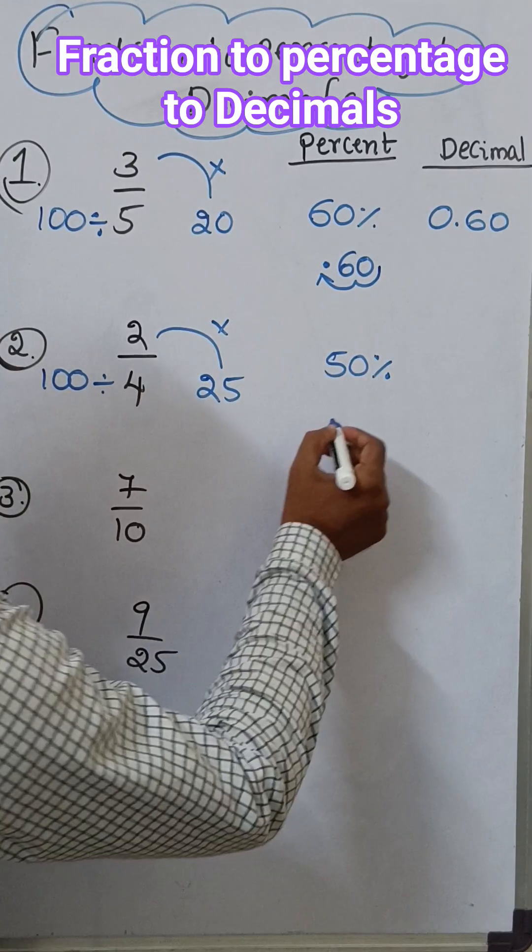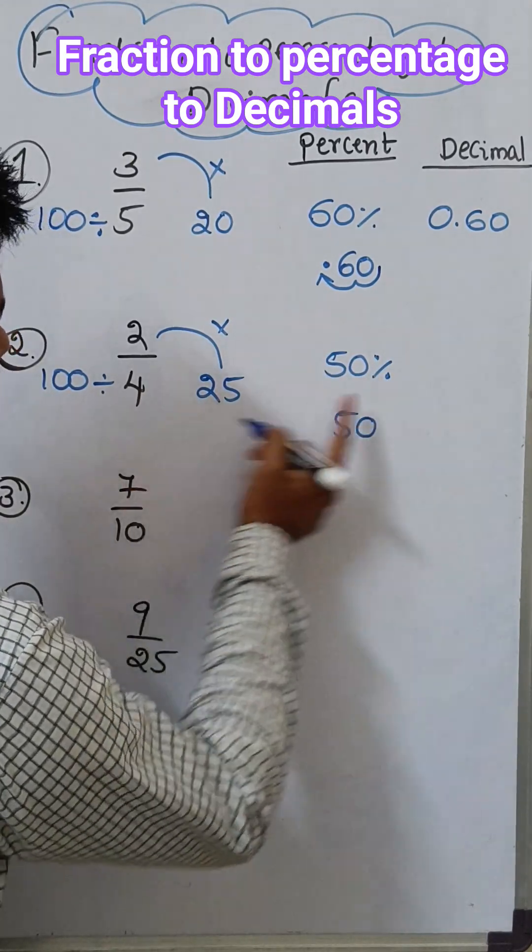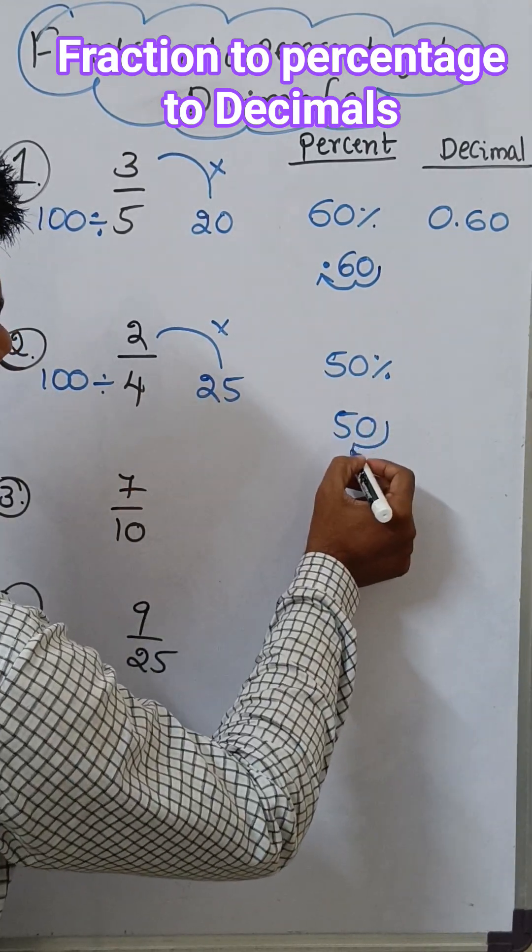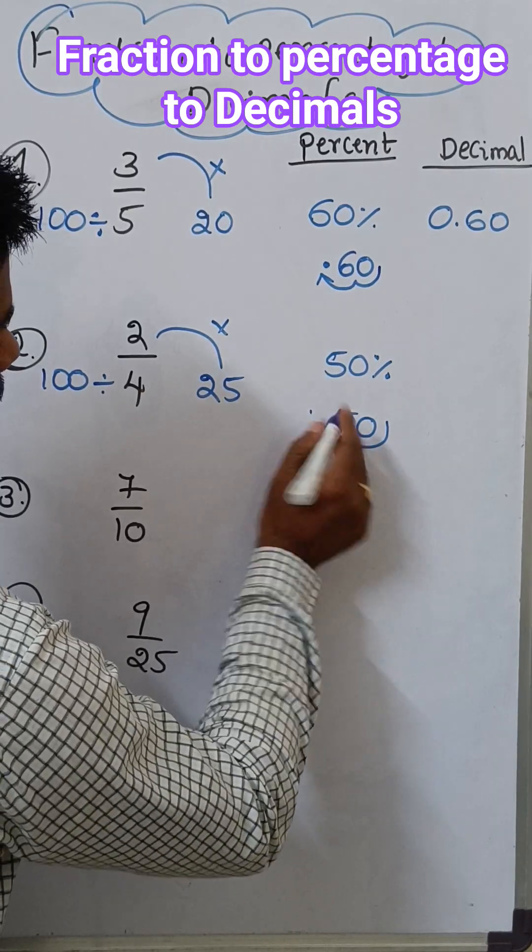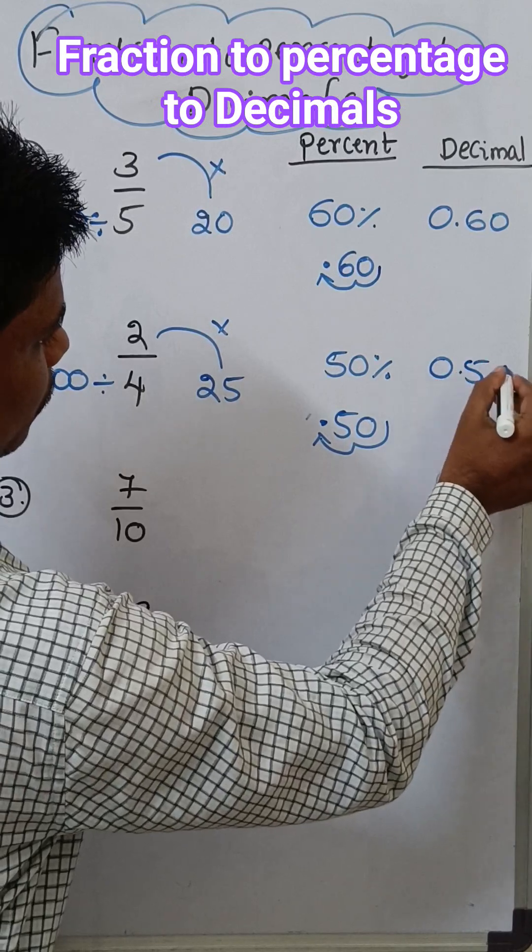50 percent, same like that. You have to move the 2 decimals. Percent means by 100, move the 2 decimals from right to left. Take the point, so 0.5.